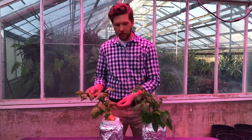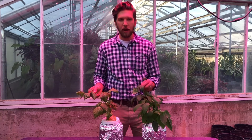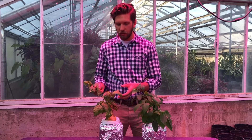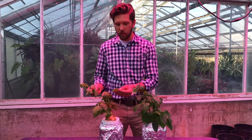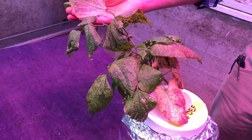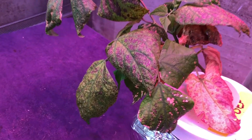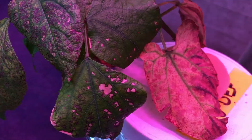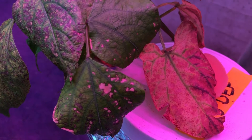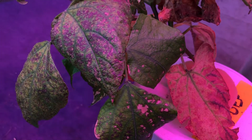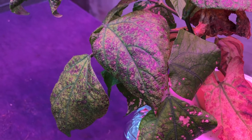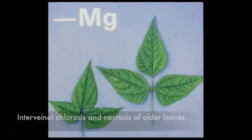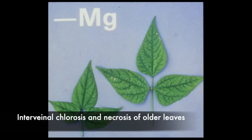That's a little bit about magnesium deficiency — short and sweet. We'll give you a closer look at this purpling or chlorosis of these older leaves. Thank you.